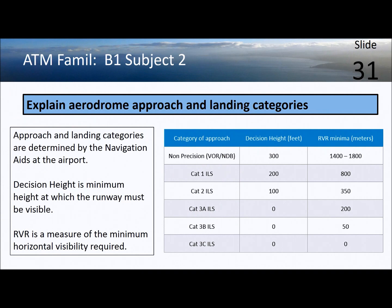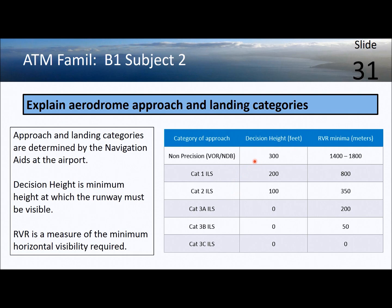The category of approach is determined by the navigation aid available at the airport. The navigation aid determines the decision height, expressed in feet above ground level. For a non-precision approach, you need to be able to see the runway when you are 300 feet above it.